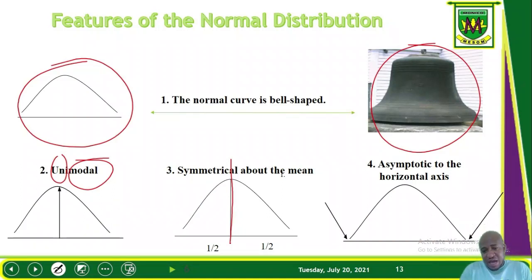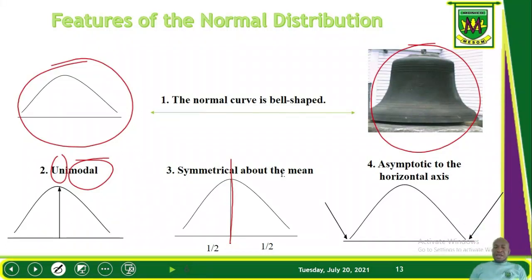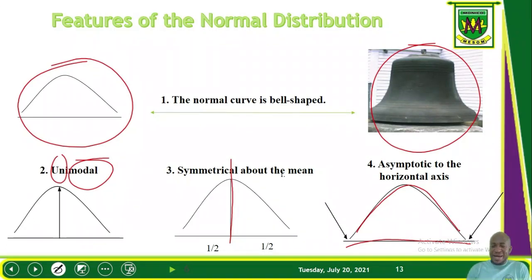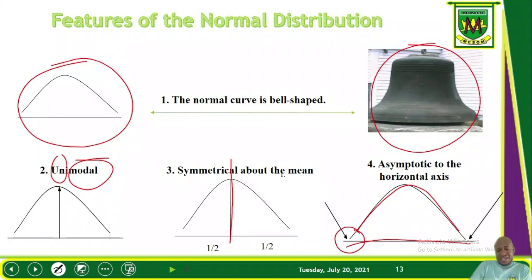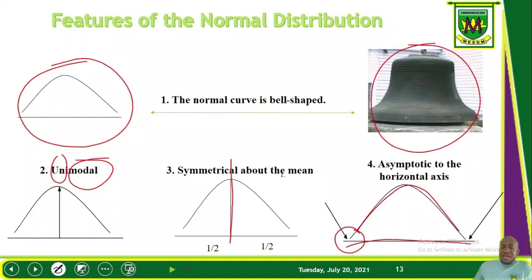The fourth feature is that the normal distribution is asymptotic to the horizontal axis. This means that the curve declines towards the horizontal axis — it moves downwards — but it never touches the horizontal axis. There is always a space between the horizontal axis and the declining curve. So if you draw your curve to touch the axis, it is not a normal curve.